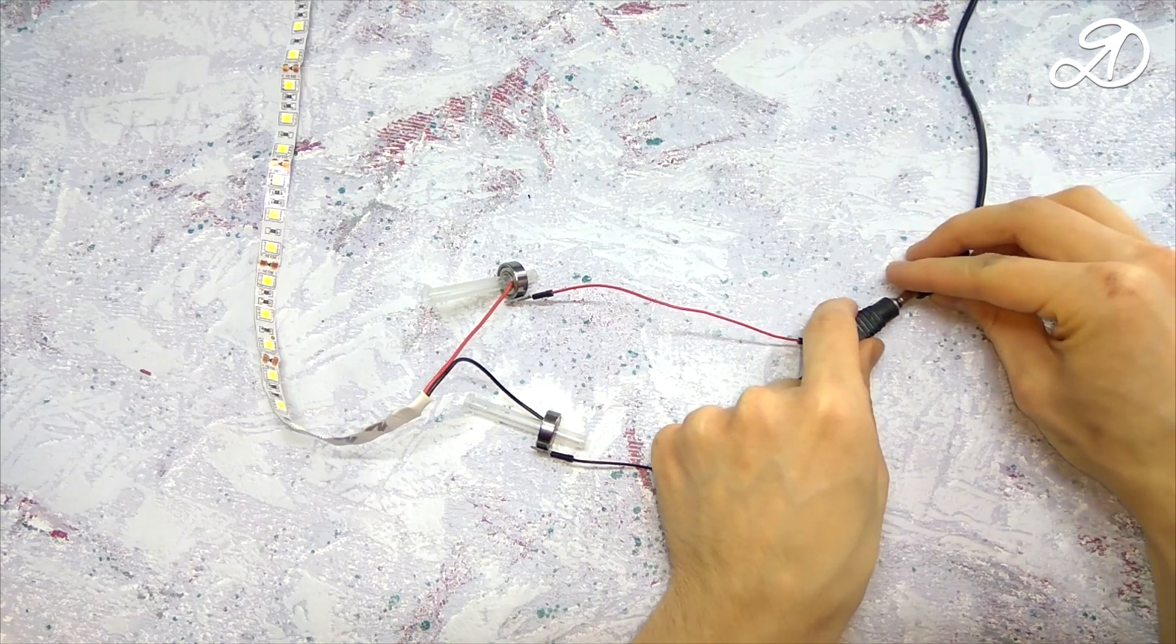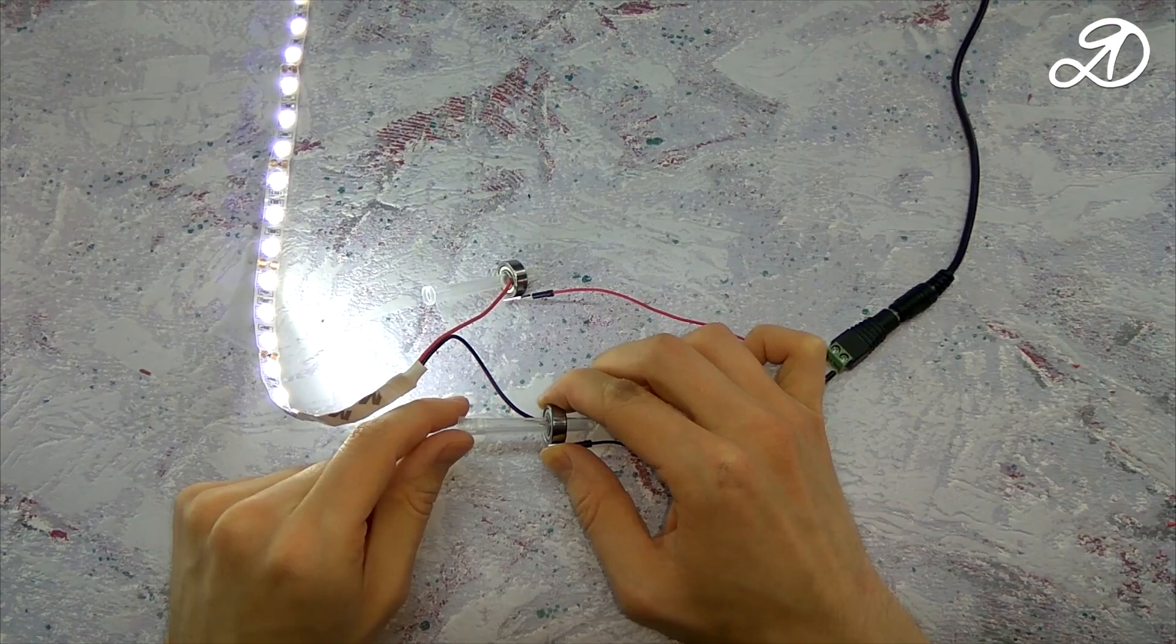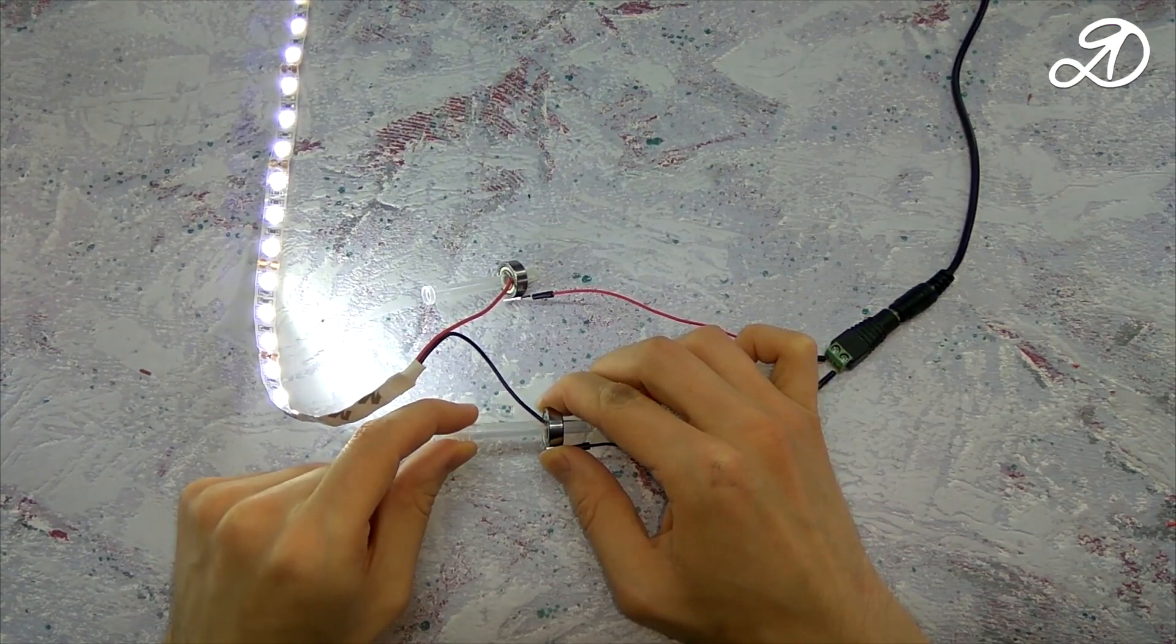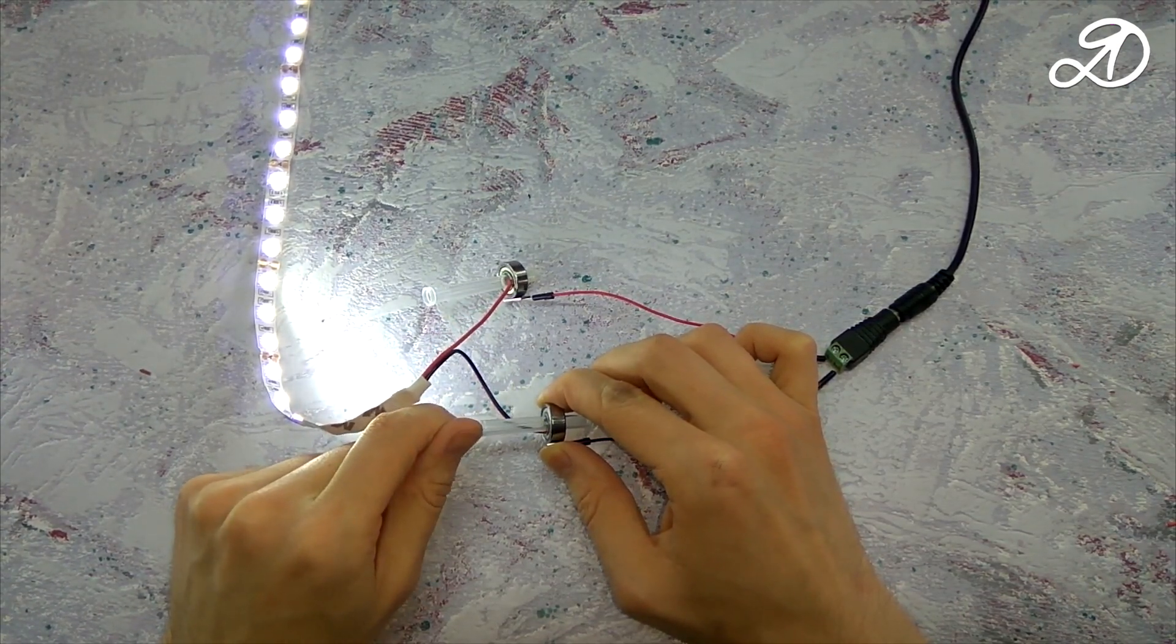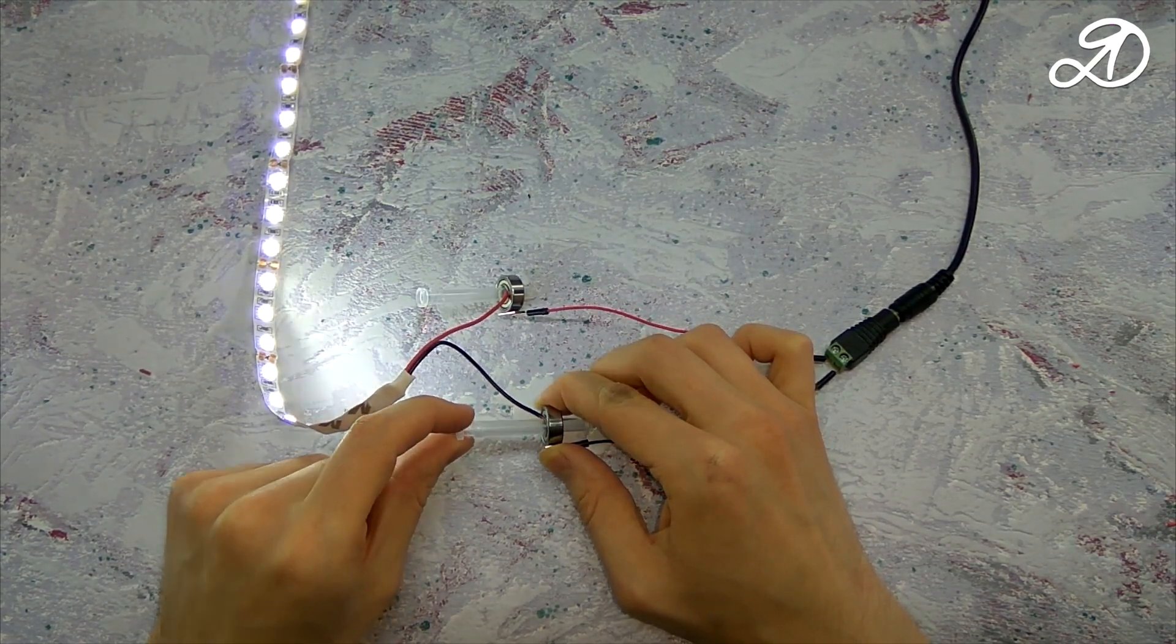Connect the power. When the bearings are rotated, the tape flashes slightly, but in a static position it shines without flickering. Great! Everything works! The experiment was a success!